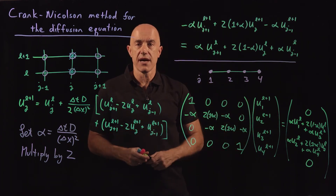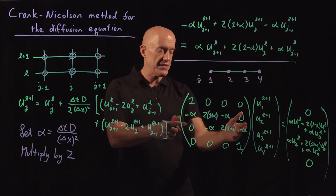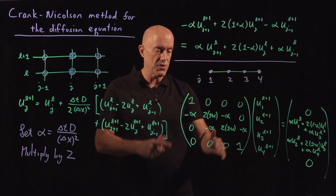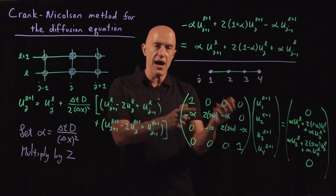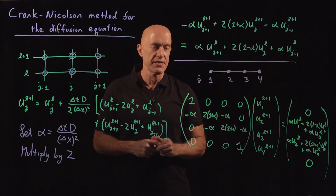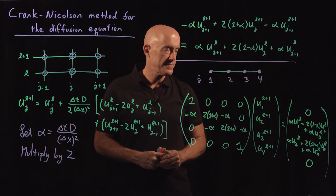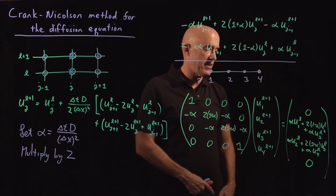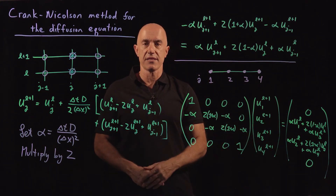This equation is a matrix equation with a very nice tri-diagonal matrix. The matrix doesn't depend on time, so in your code you only need to define it once. If you want to be clever, you can do the LU decomposition of this matrix and then use that decomposition when doing Gaussian elimination at each time step. The right-hand side keeps changing in time, so every time step you need to update it based on the solution at the previous time step. Boundary conditions can be put directly into the matrix.